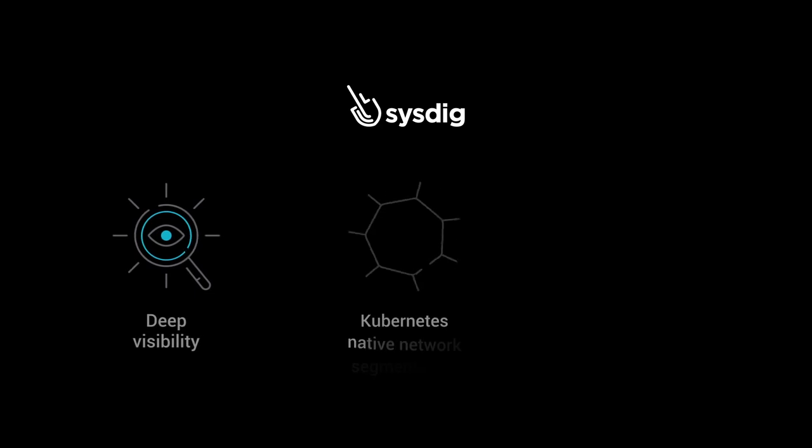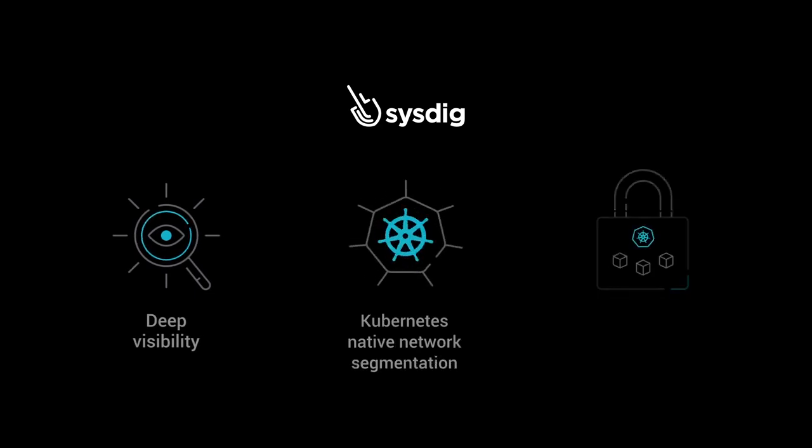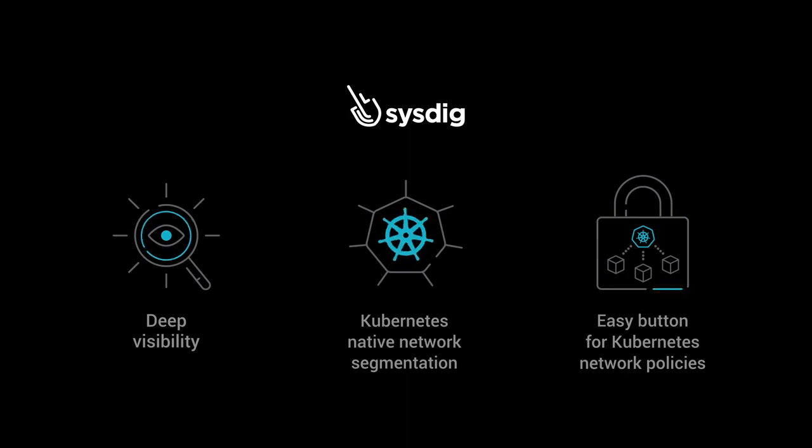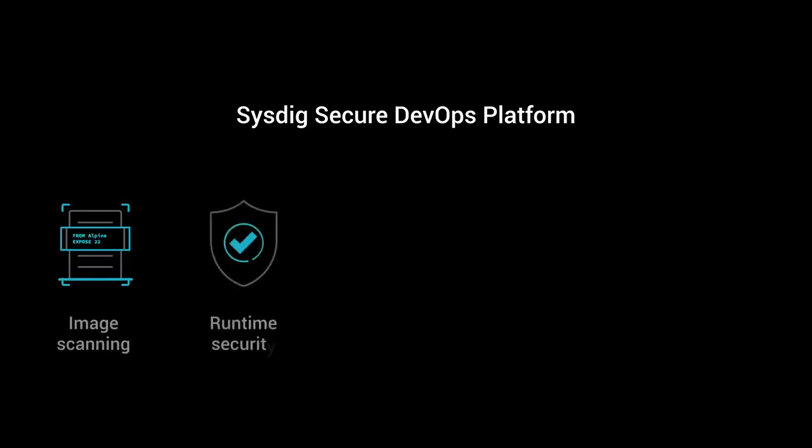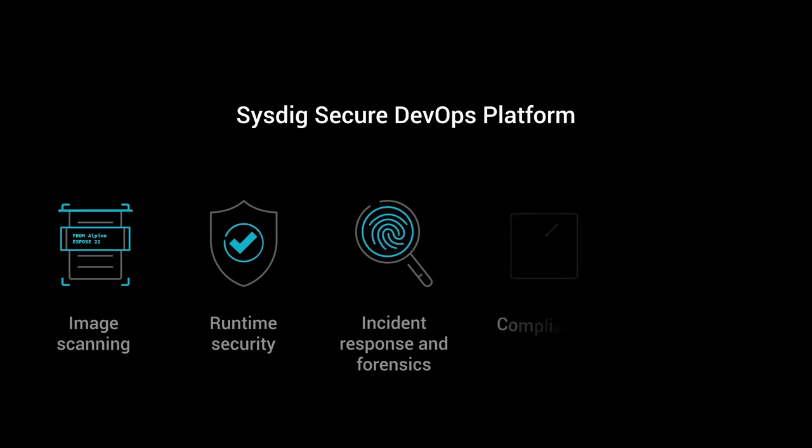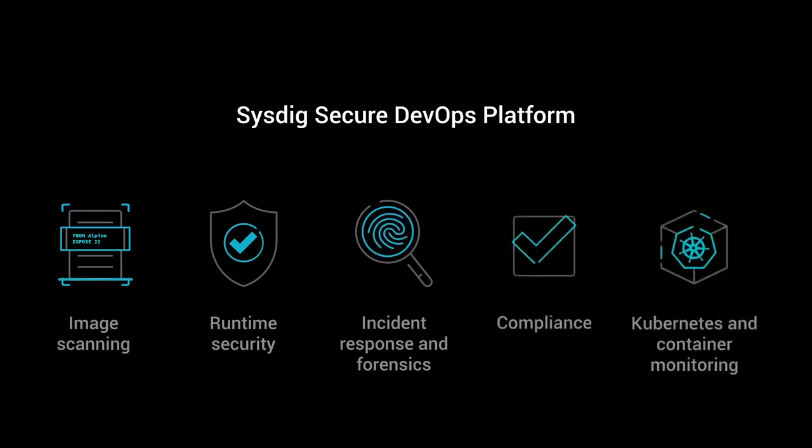Sysdig Secure offers deep network visibility, network segmentation that is Kubernetes-native, and is DevOps-ready with an easy button to automate Kubernetes network policies. With the Sysdig platform, you can confidently run containers and Kubernetes by securing the build pipeline, detecting and responding to runtime threats, continuously validating compliance, and monitoring containers and Kubernetes. Try the Sysdig Secure DevOps platform today. Have a great day!